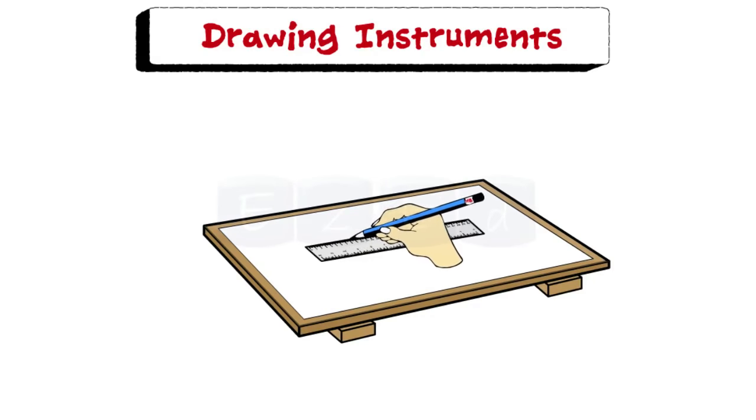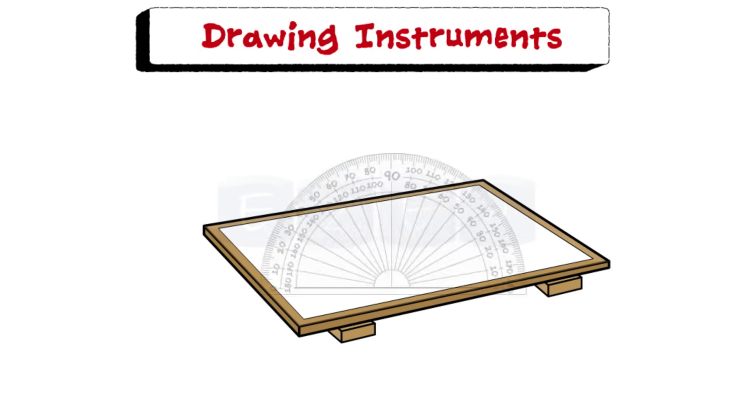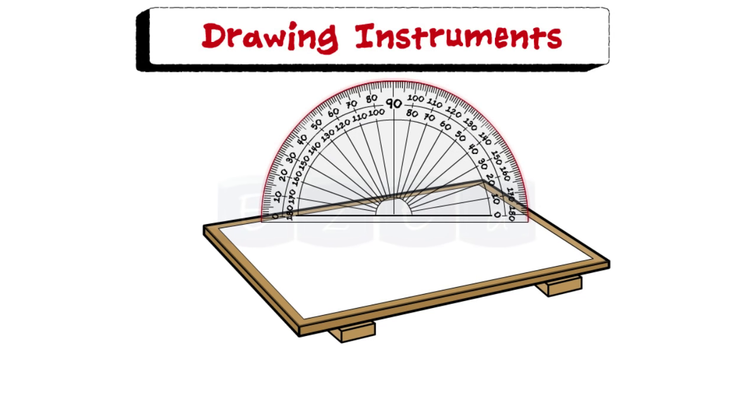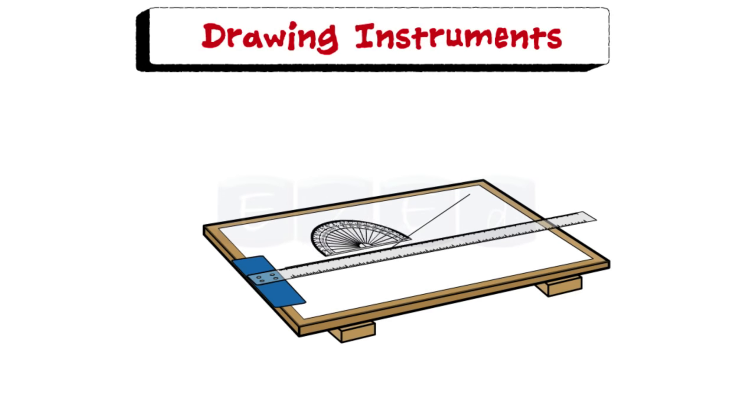A scale is used to draw lines of specific length. Protractor is flat and semi-circular in shape. Its circumferential edge is graduated to 1 degree divisions and is numbered at every 10 degree interval and is readable from both the ends. The protractor is used to draw or measure angles.